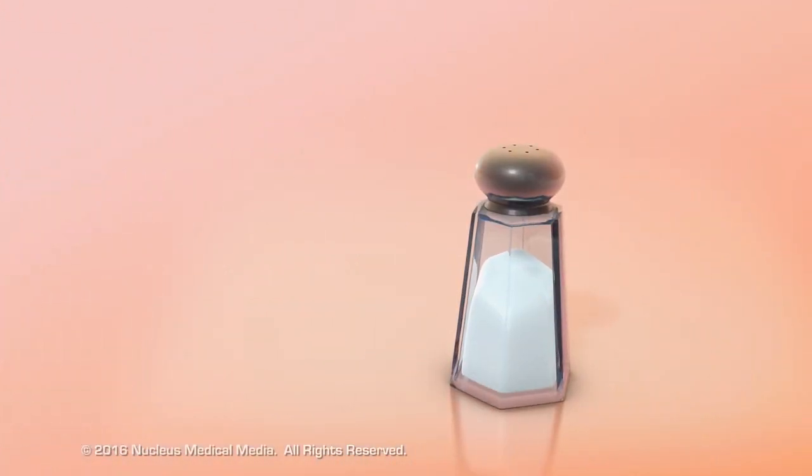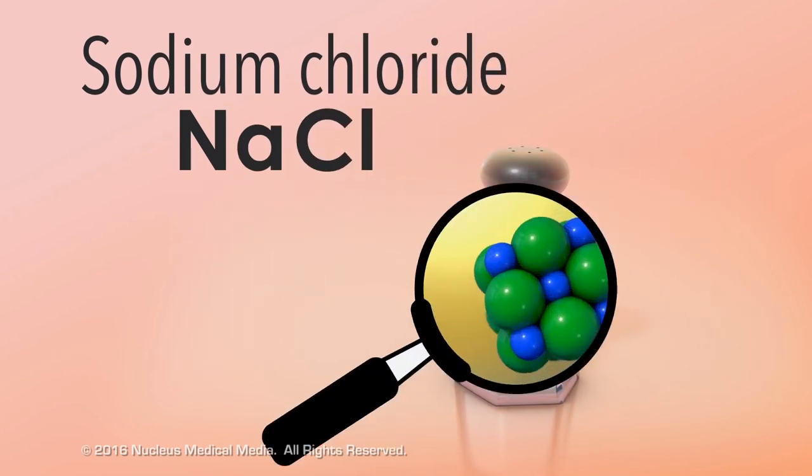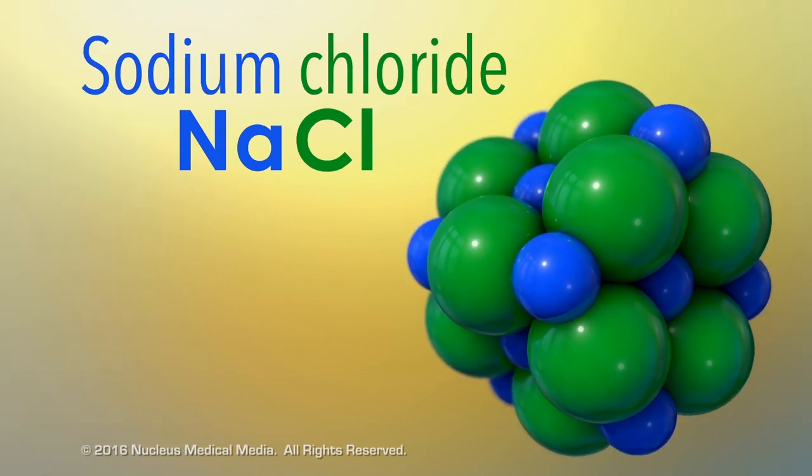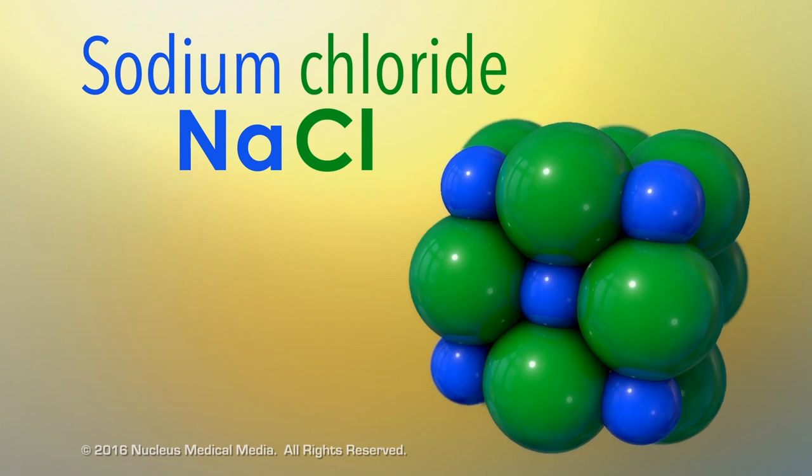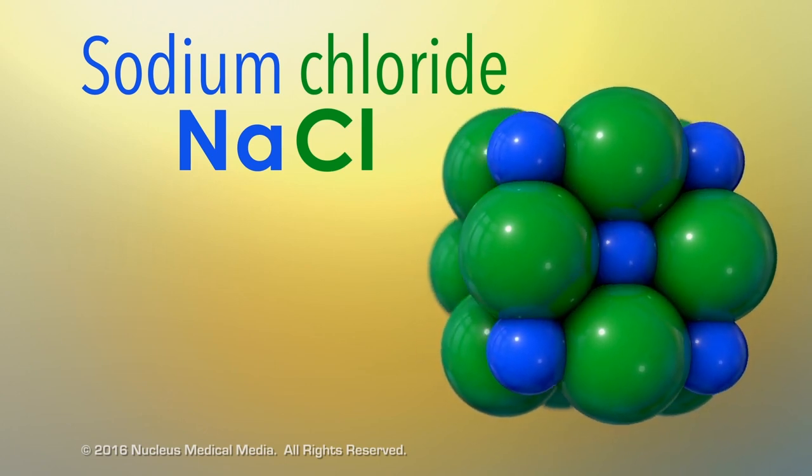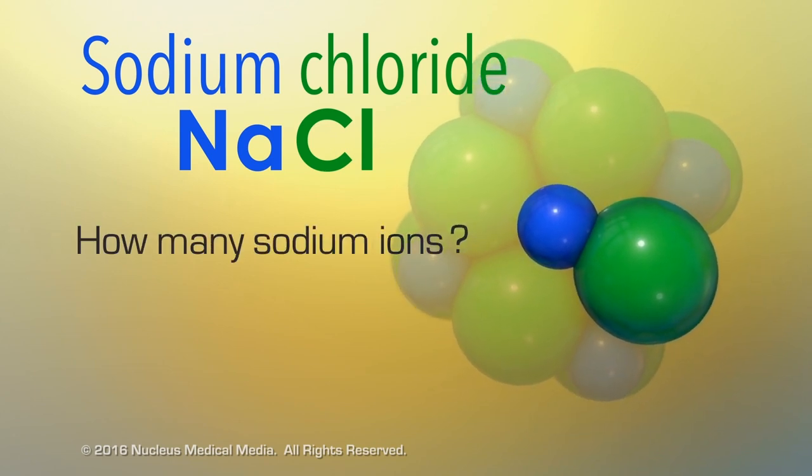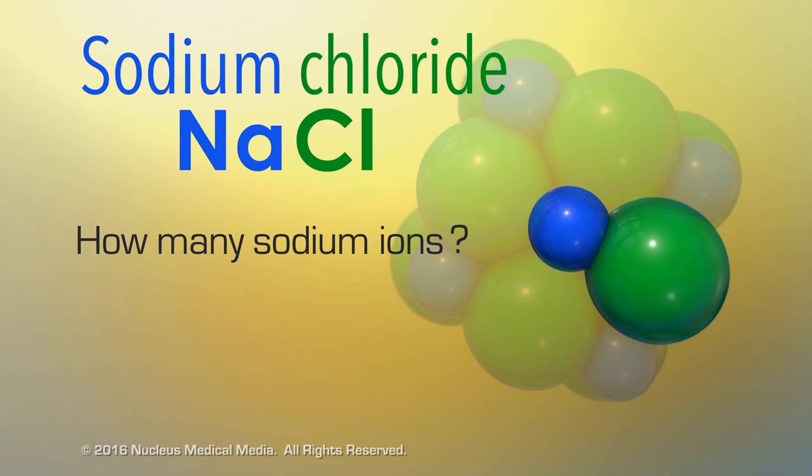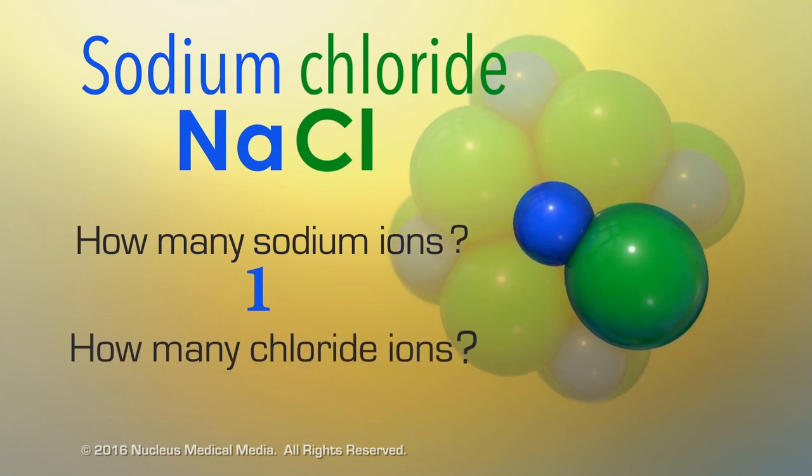The next compound we'll look at is sodium chloride, commonly known as table salt. Sodium chloride consists of sodium and chloride ions. Ions are charged particles because they have gained or lost electrons. How many ions of sodium are there in one unit of the chemical formula for sodium chloride?